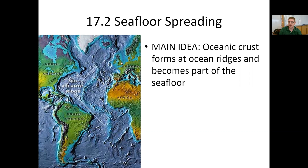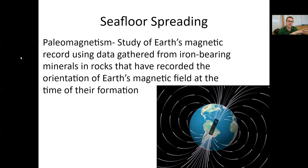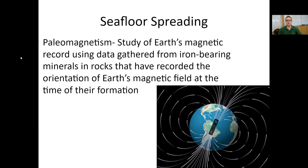Before we get too deep into it, we need to establish this idea of paleomagnetism. What is paleomagnetism? It's the study of Earth's magnetic record using tiny iron-bearing minerals found in rocks that we can use to figure out the orientation of Earth's magnetic field at any given time. This is important because it gives us symmetry when trying to determine the age of rock material on both sides of our mid-ocean ridge.